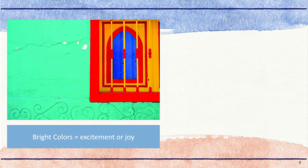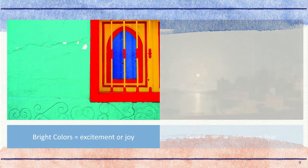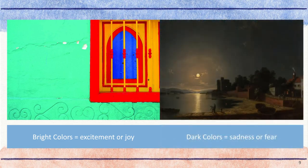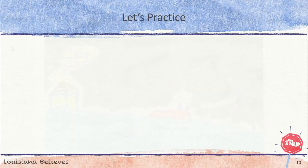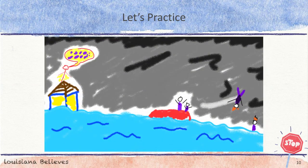We talked earlier about how people use art to express emotions, especially with the colors they choose. Bright colors usually show emotions like excitement or joy, while dark colors show emotions like sadness or fear. Look closely at this picture — the details we noticed before and also the colors that the artist used. What emotions do you think are shown? Pause the video now and answer the question at the second stop sign on your handout. When you are done, hit play to continue.